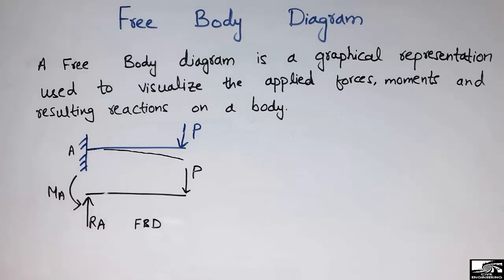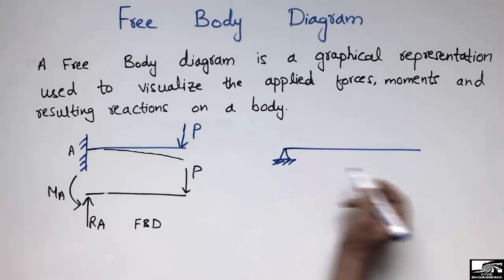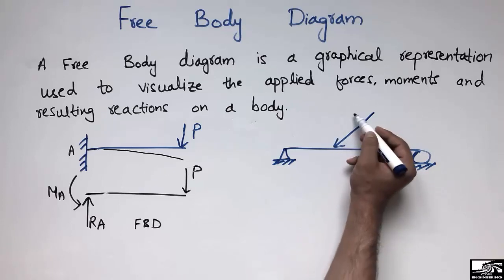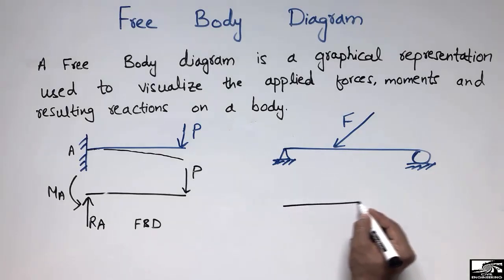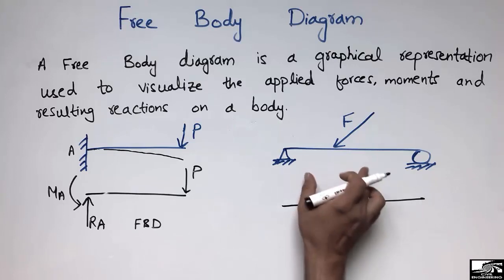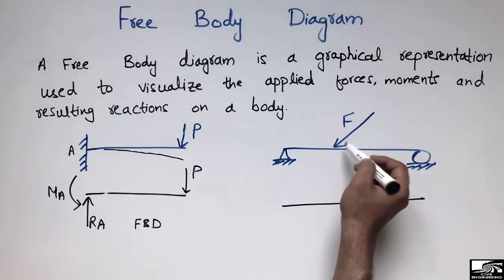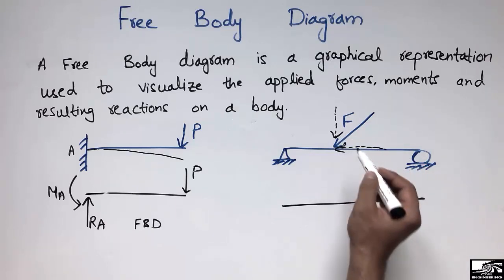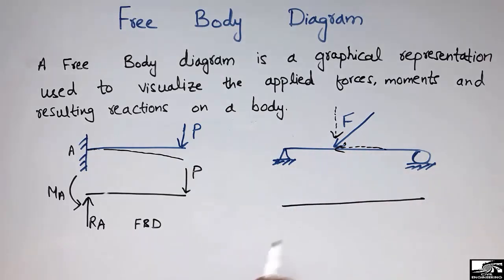Now I'm going to draw another type of beam with an inclined load. This is a simply supported beam with a hinge support and a roller support, but in this case an inclined load F is acting on the beam. For the free body diagram, I will draw the beam, and since the inclined load has two components — one vertical and one horizontal — these will be resisted by the supports.